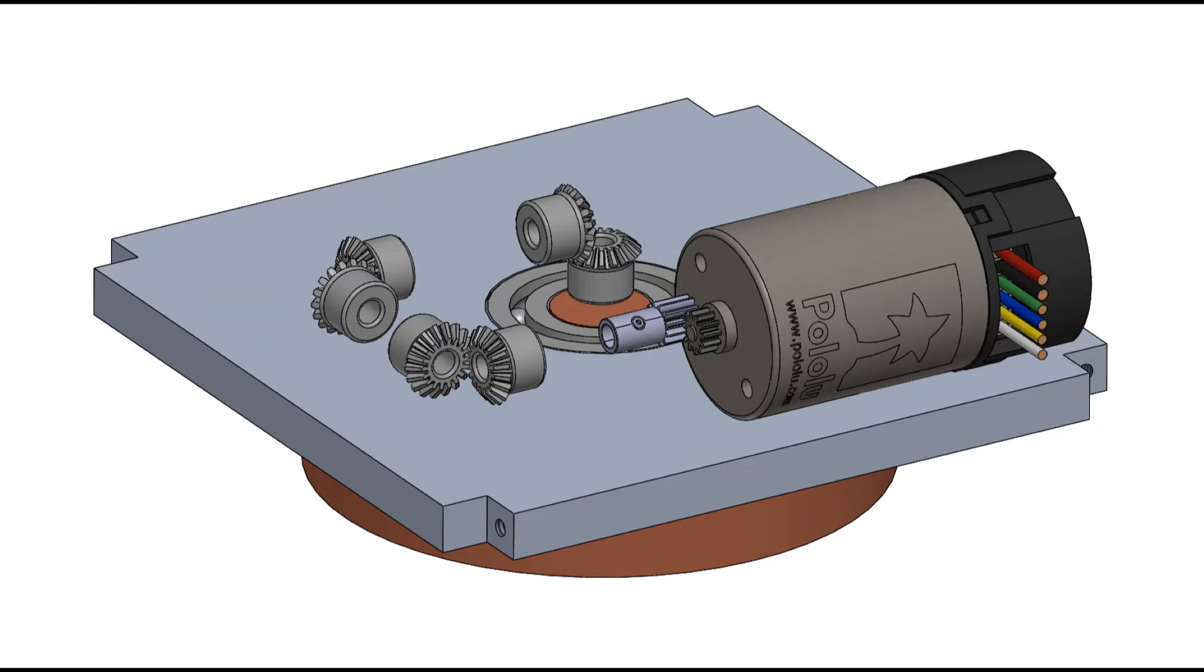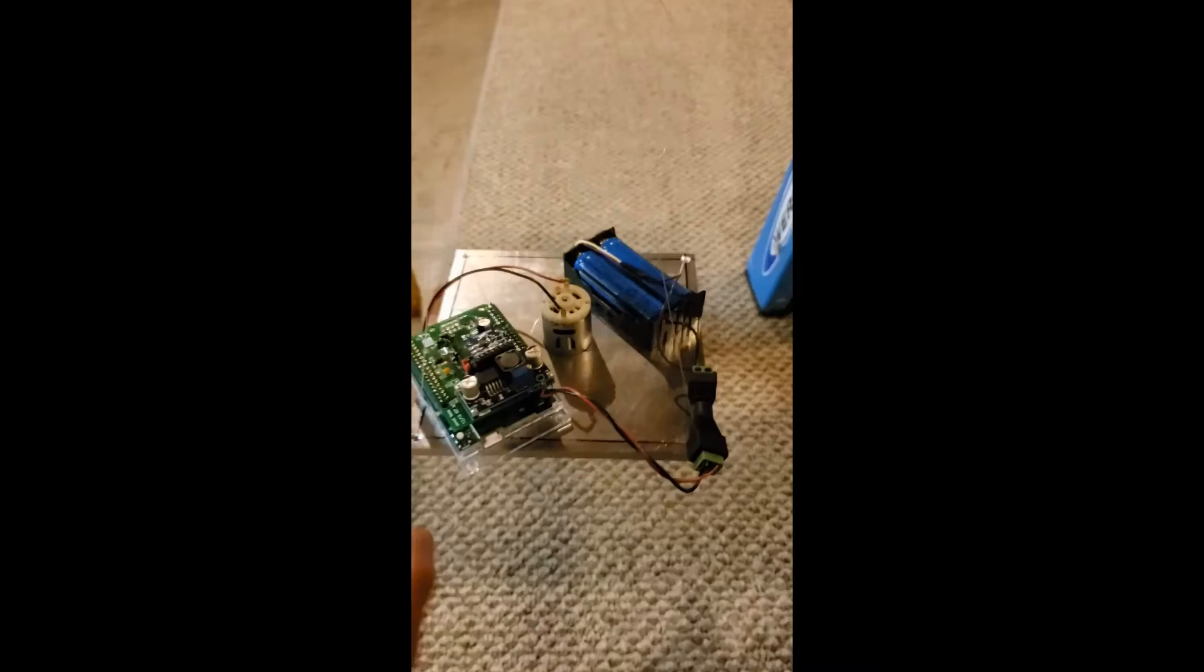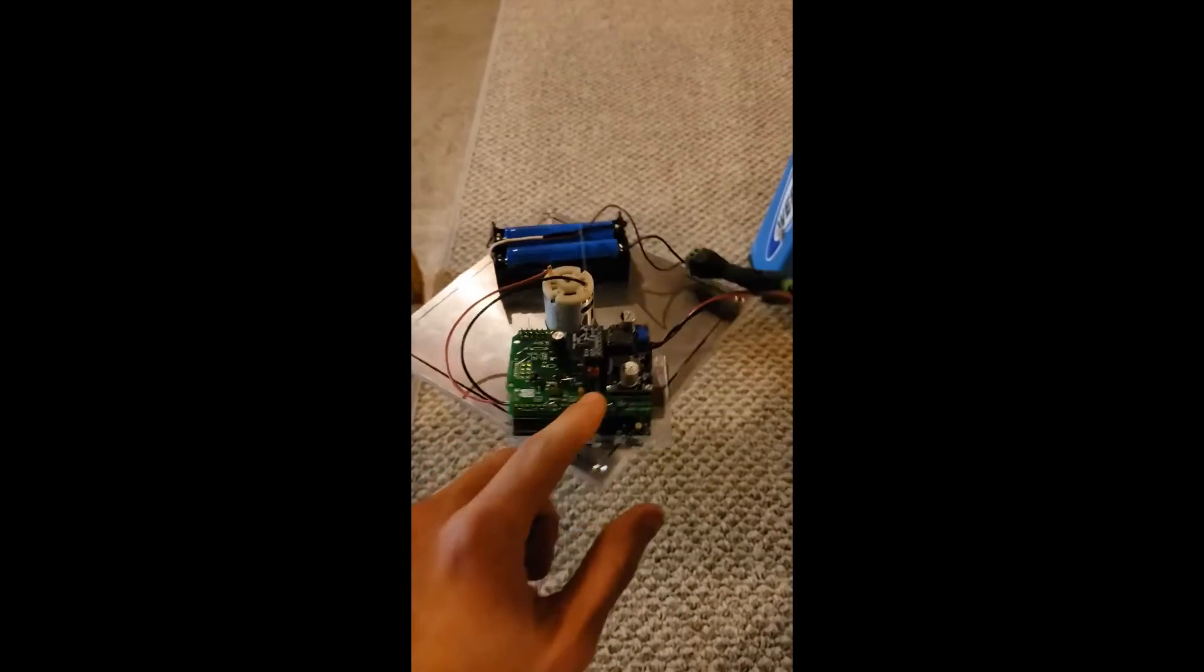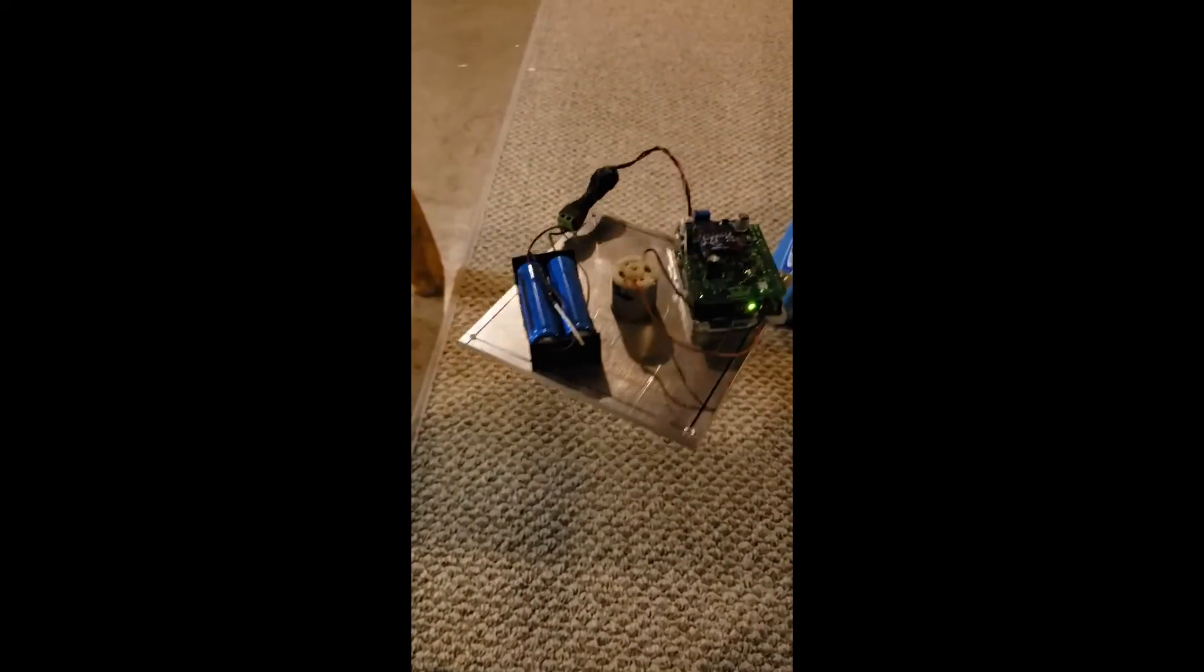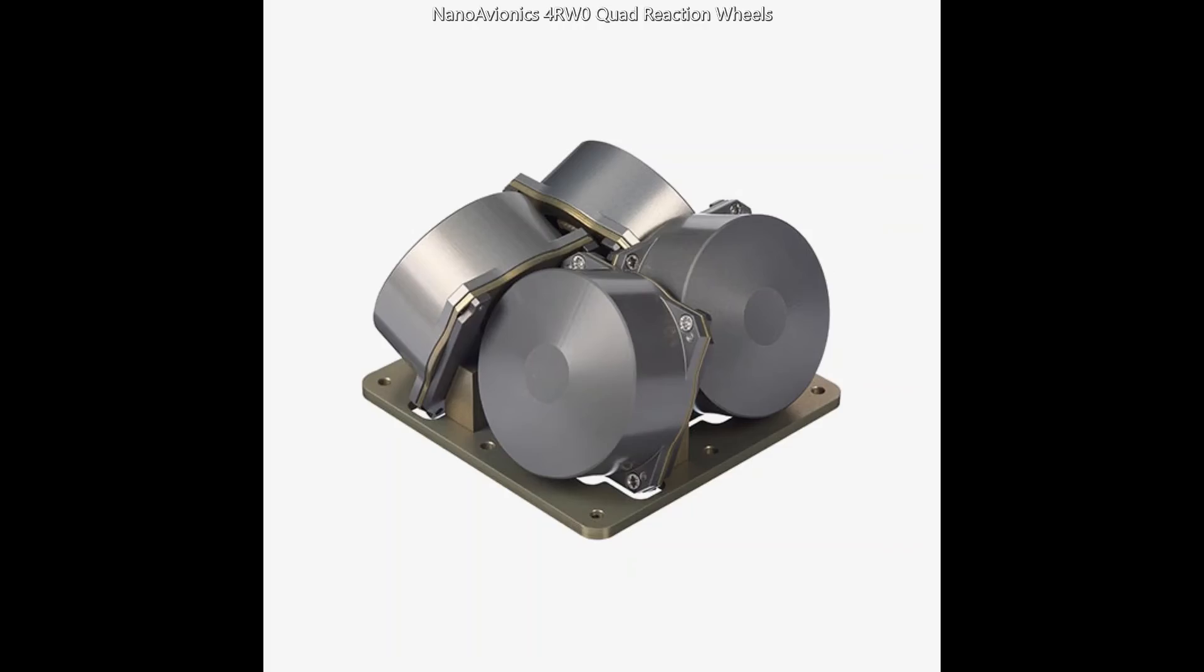For the attitude control system of the CubeSat, we started with the requirement that the CubeSat must have at least 3 degrees of freedom orientation control. This is necessary to orient the CubeSat after Peapod ejection to begin the experiment. Eventually, we spec'd out the COTS component from nanoavionics.